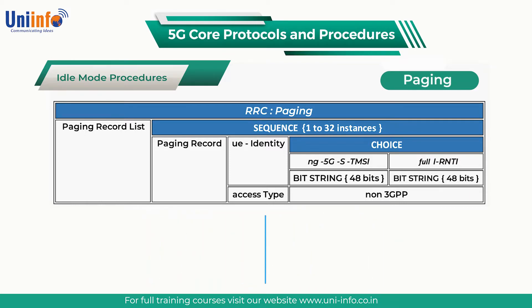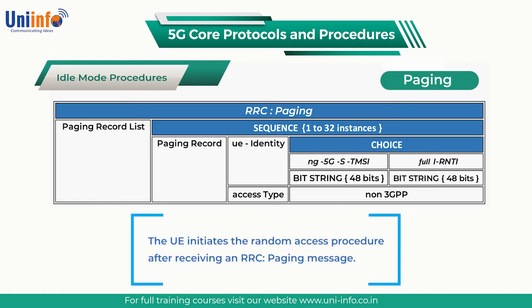The UE initiates the Random Access Procedure after receiving an RRC paging message. The RRC setup request message is sent in MSG3 using a cause value of mobile terminating access. A NAS service request message is included within the RRC setup complete message. The base station forwards this NAS message to the AMF to complete the paging procedure.